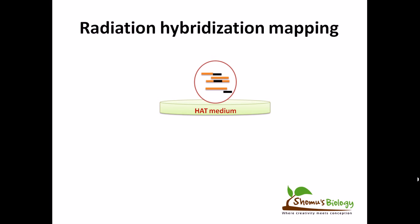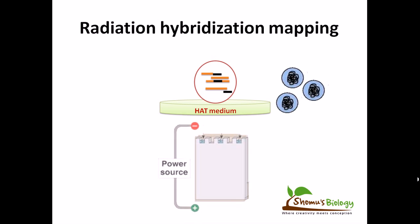In this HAT selective medium, it will develop in further generations into a certain number of cells. When we get an adequate number of cells, we will extract the DNA out of the cells and load them in an agarose gel in different wells.